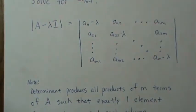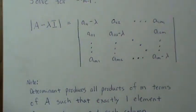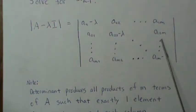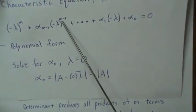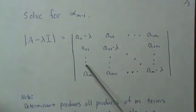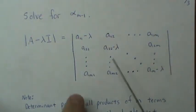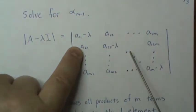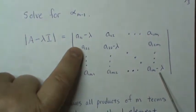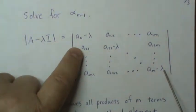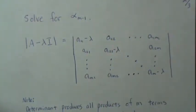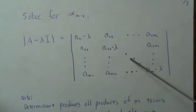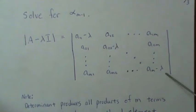We're looking at the coefficient of the lambda to the M minus 1 parameter. If we take any product that includes a non-diagonal element — say we take this one first and then this one, and then all the diagonal elements — the biggest lambda power we can get is M minus 2. So there's really no way to get lambda raised to the M minus 1 except from the product of the diagonal elements, each one of those.